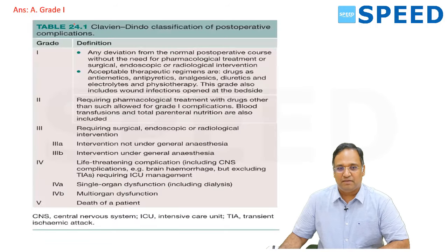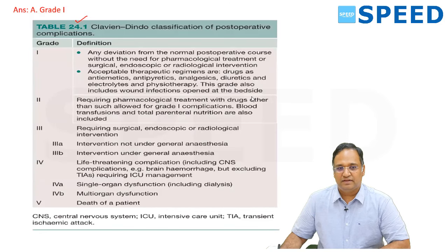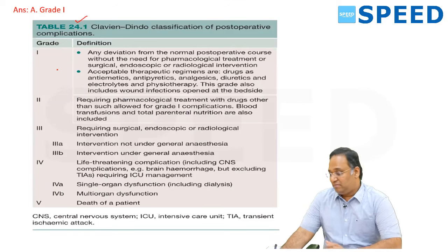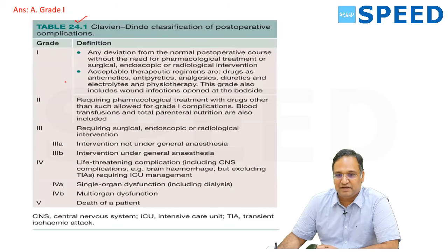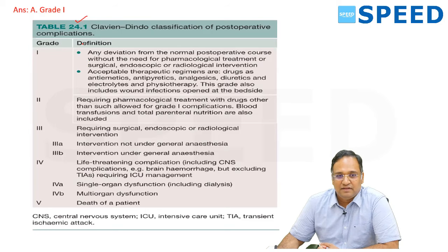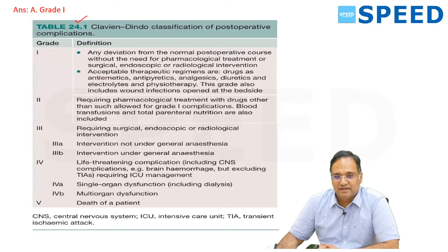Look into table number 24.1. If you have any corrections or are not convinced with my answer, you can tell me and we can have a discussion. Grade 1 means any deviation from the normal postoperative course without the need for pharmacological treatment or surgical, endoscopic, or radiological intervention. Acceptable therapeutic regimens include antiemetics, antipyretics, analgesics, diuretics, electrolytes, and physiotherapy.